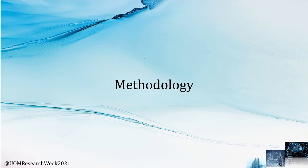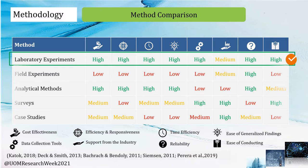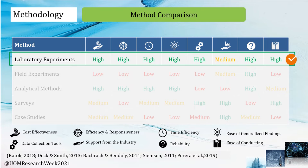Moving to the methodology section. When I reviewed the literature, I found five methodologies: laboratory experiments, field experiments, analytical methods, surveys, and case studies. I used a comparison chart to decide the appropriate methodology for the research. You can see at the bottom of the slide all the parameters used to compare these methodologies. For example, for the cost effectiveness parameter and ease of generalizing findings, laboratory experiments has the highest value. After carefully studying these five methodologies, I decided laboratory experiments would be most appropriate for the research.